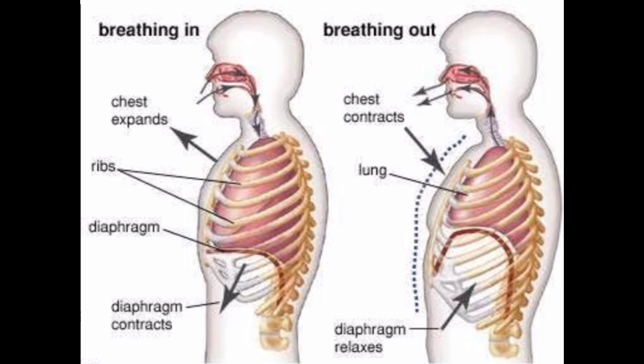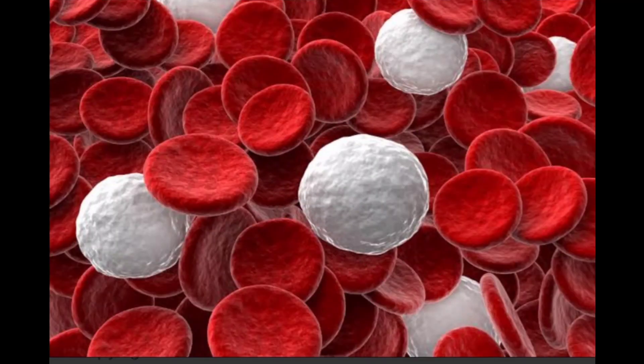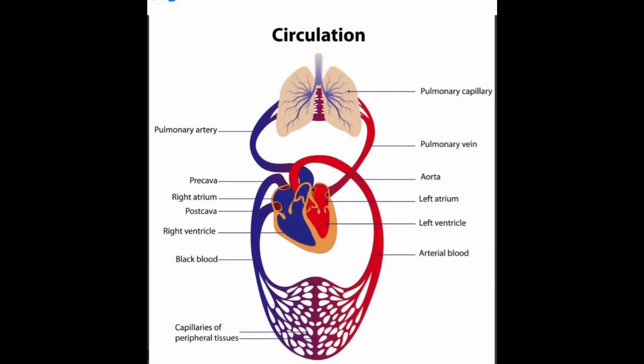During respiration, oxygen is carried by the blood to all parts of the body. Hemoglobin of the red blood cells binds oxygen and transports it to different parts. As the blood passes through the tissues of the body, oxygen from the blood diffuses into the cells, whereas carbon dioxide produced during respiration diffuses into the blood and is carried to the lungs, where breathing in and breathing out takes place.